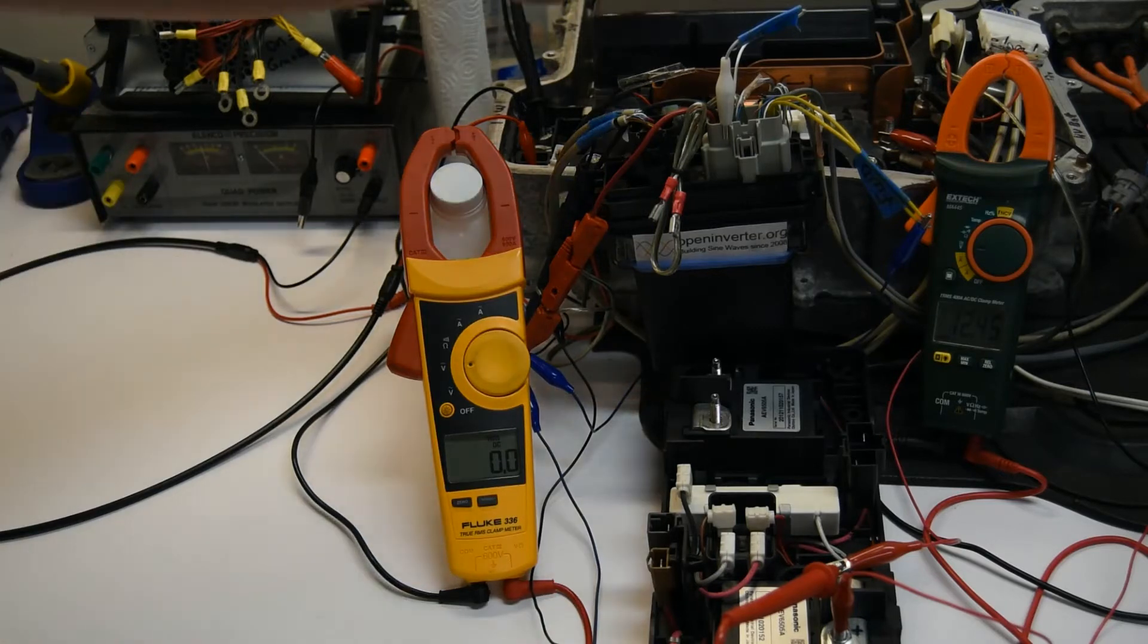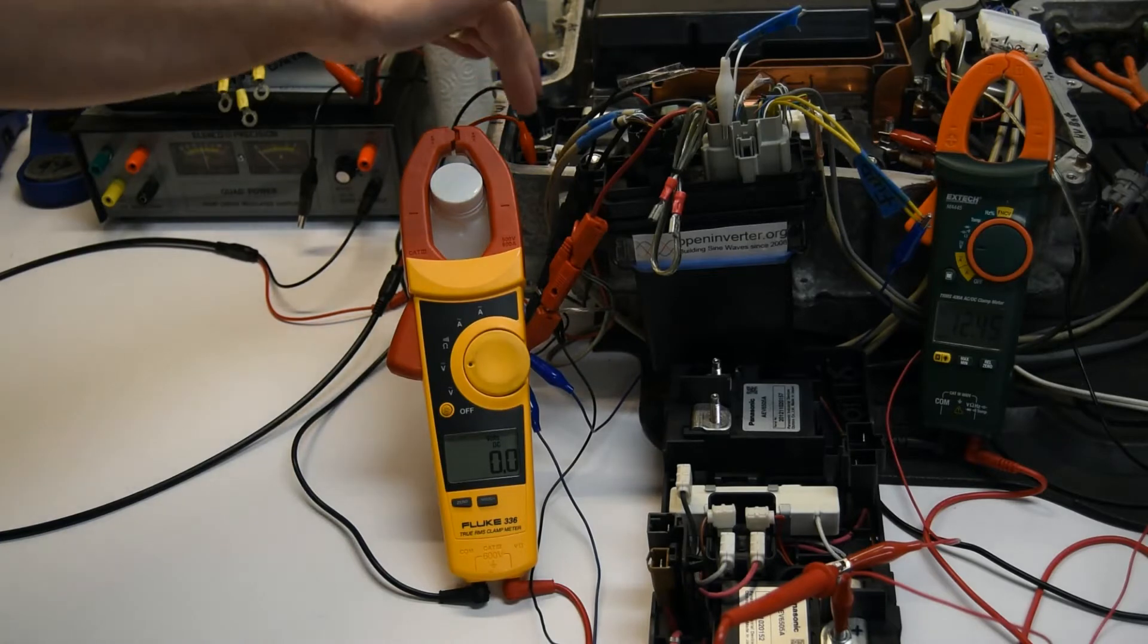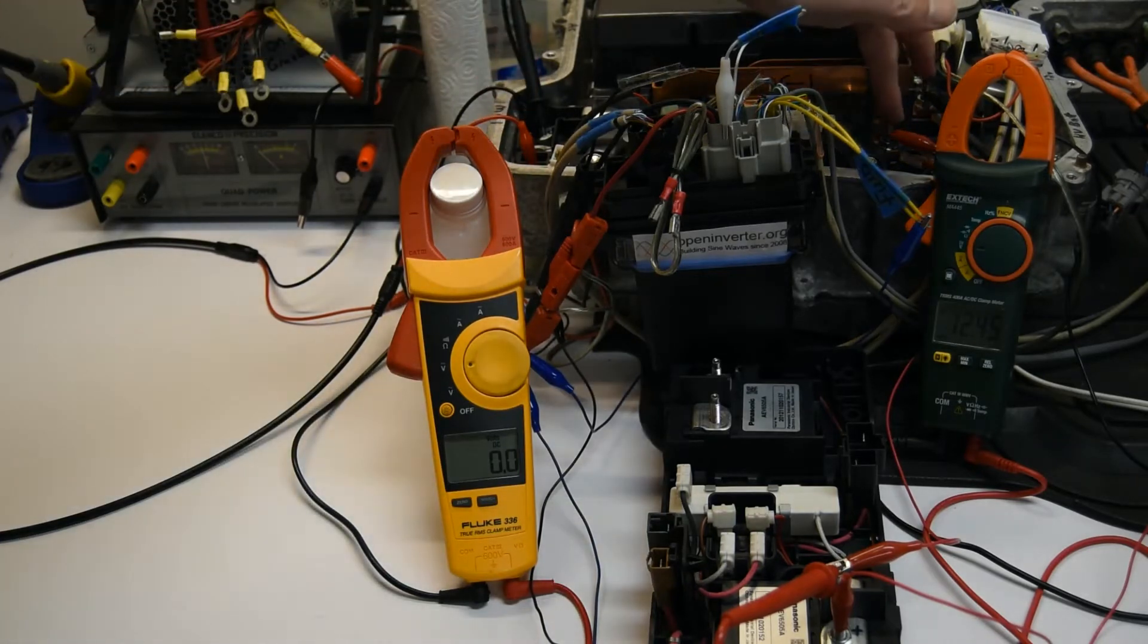So logically, there's got to be some way, because the only power to charge the batteries comes from the MG2 or MG1. So if I connect a three-phase motor to here, I should be able to get power on the DC side to charge the battery.